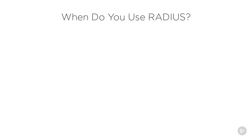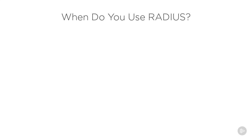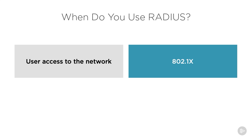If TACACS+ is ideal for device administration, what is a good use case for RADIUS? RADIUS is ideal for user access to the network, because of the different attribute value pairs that can be placed inside RADIUS messages. This allows the AAA server to determine which VLAN the user has access to and if any ACLs should be applied. In fact, the 802.1x protocol relies on RADIUS to properly function — without AV pairs and the EAP protocol, 802.1x would not work.